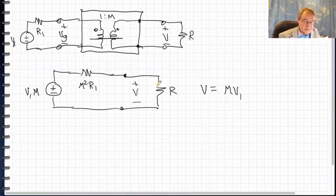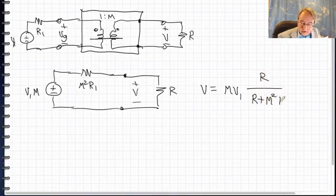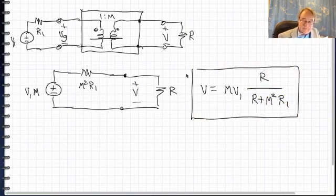times the divider ratio of these two resistors, which would be R over R plus M squared R1. And that's the equation for the output voltage. So the conversion ratio M affects not only the voltage source, but also this divider ratio. And taken together, we can solve for the output voltage.